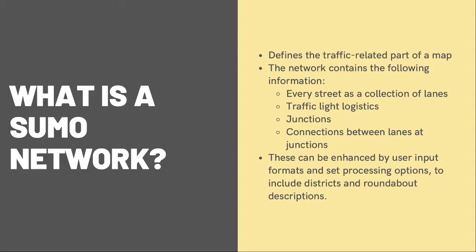The SUMO network contains the following information. Every street, which is our edges, is a collection of lanes, and that includes the position, shape, and speed limit on every lane. There are traffic light logistics that are referenced within the junctions. The junctions include right-of-way regulations and connections between those lanes and junctions. These can be enhanced by user input formats and set processing options so that they can include districts and roundabout descriptions.